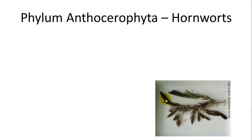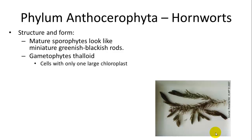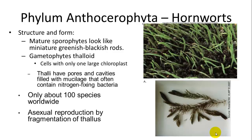Anthocerophyta are the hornworts. Their mature sporophyte looks like a miniature greenish-black rod. The gametophytes are thaloid, just like in the liverworts, and their cells contain only one large chloroplast. The thalli have pores and cavities similar to liverworts, and often contain a symbiotic nitrogen-fixing bacteria. There are only about 100 species, and they asexually reproduce by fragmentation.